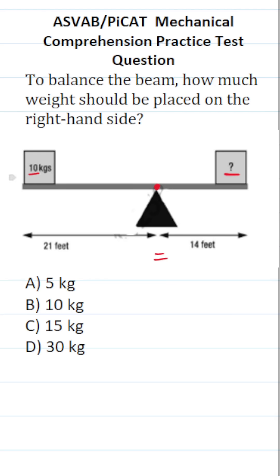I'm going to take the weight of 10 kgs, that is 10, and I'm going to multiply it by the distance it is from the center of the fulcrum. We can see that this 10 kg weight is 21 feet away from the center of the fulcrum.